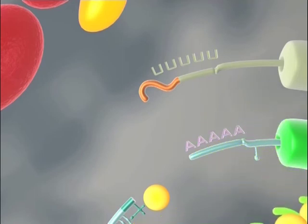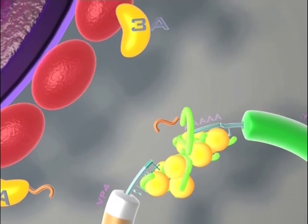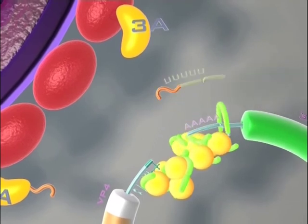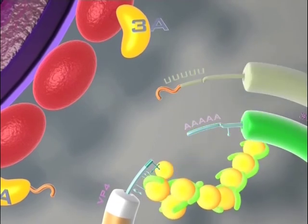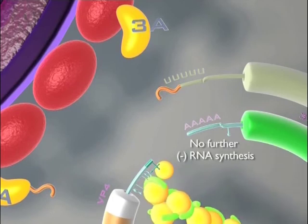According to this model, after the 3D pole starts copying the template RNA into a minus strand, the elongating polymerase may destroy the protein-RNA interactions within the 3-prime terminal ribonuclear protein complex. That event would prevent further minus strand RNA synthesis.